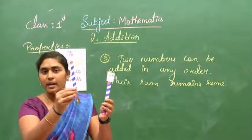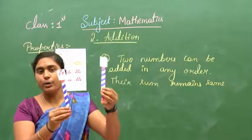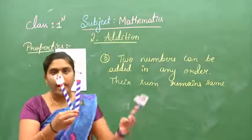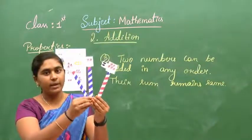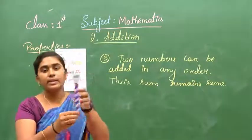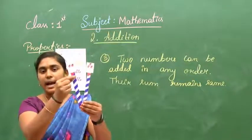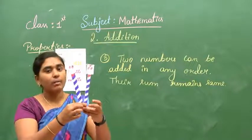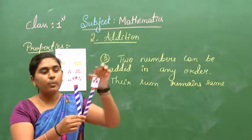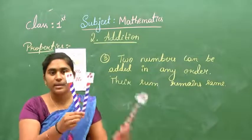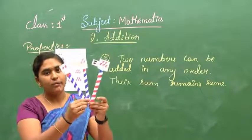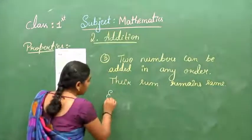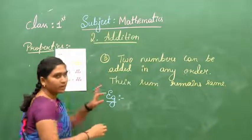In the first picture we have 3, in the second picture we have 2. So what is the addition of 3 plus 2? It is 5. 3 plus 2 is 5. But what I will do? I will interchange these two places. I will add 2 to 3 — 2 plus 3. What will be the answer for 2 plus 3? The answer is 5 only. What this property is saying is: even though you change the places of the first number and second number, the answer will be the same.